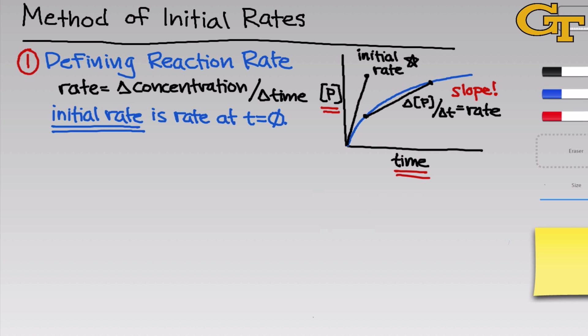Now, one thing you'll notice if you examine the shape of the blue curve here is that the rate varies as the reaction proceeds. The rate appears to slow down, in fact, as the reaction goes forward. And the reason for that is that the rate depends on concentration. As concentration changes, the reaction rate changes.